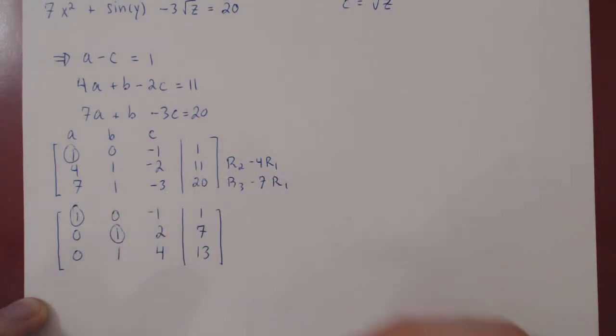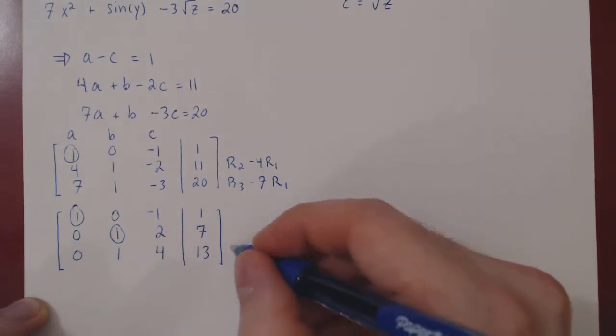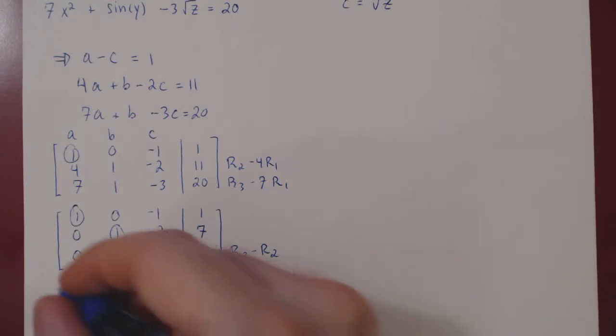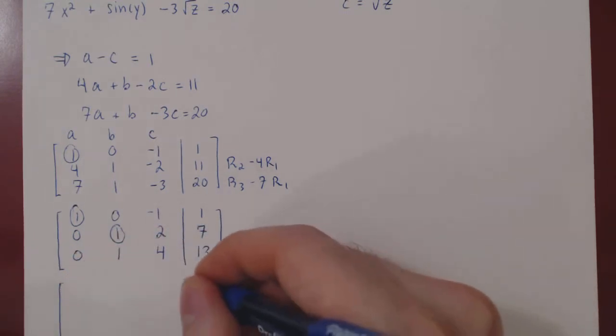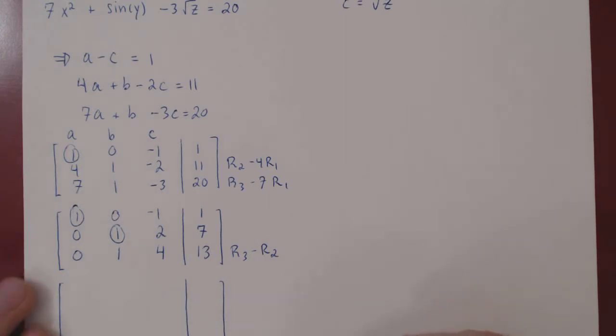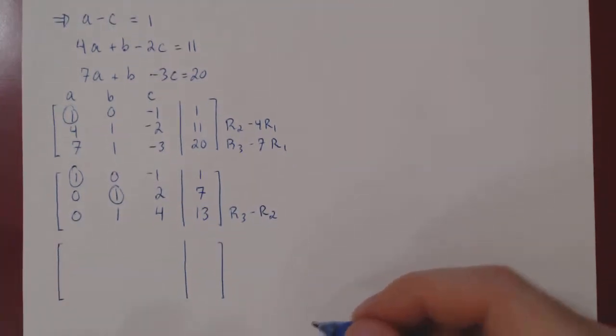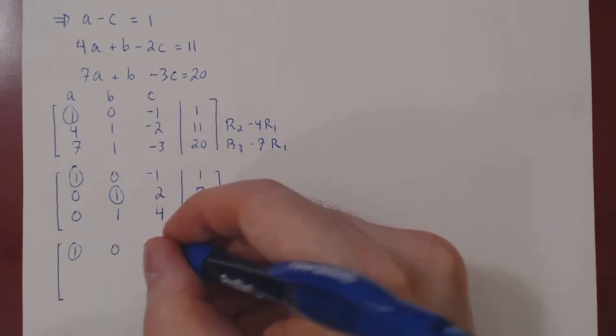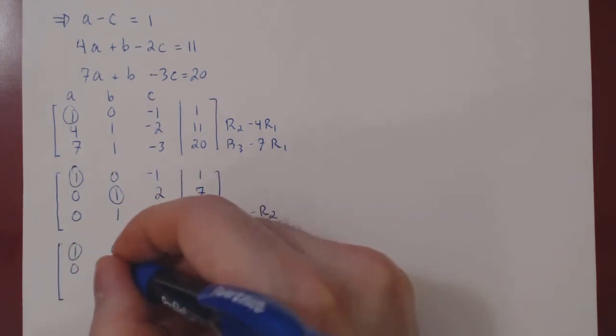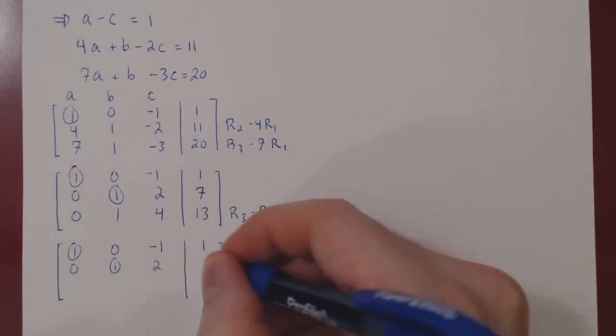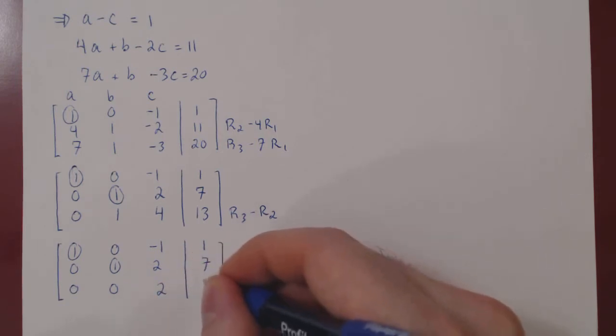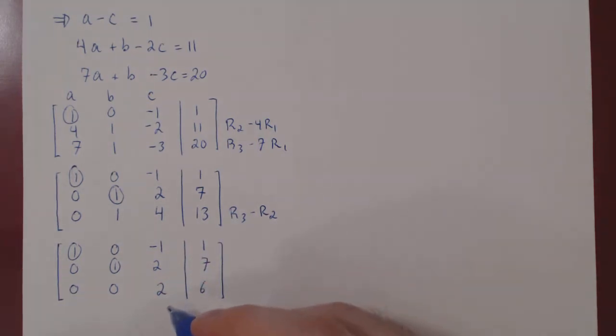We have our second leading one for free. We can kill the entry below by doing row 3 minus row 2. We can recopy row 1 and row 2 as we're not changing them. And we can easily get our third leading one by multiplying row 3 by 1 half.